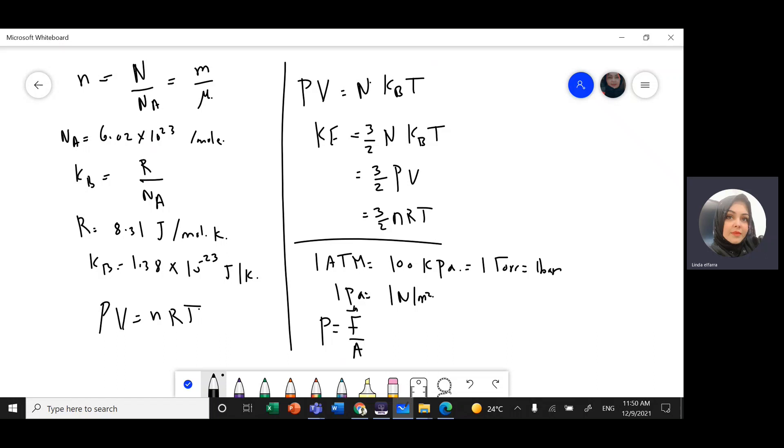For an ideal gas, P1V1 divided by T1 temperature in Kelvin equals the second pressure times second volume after we change the temperature divided by T2.